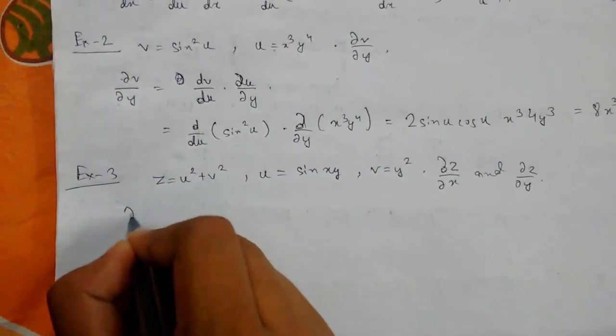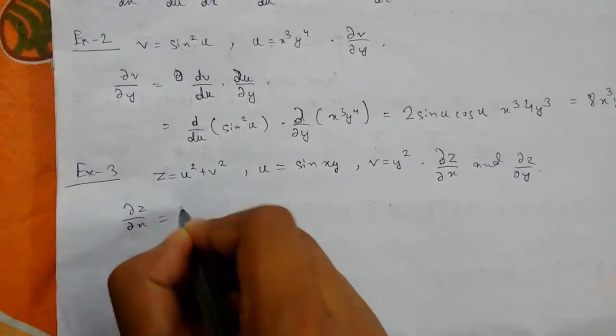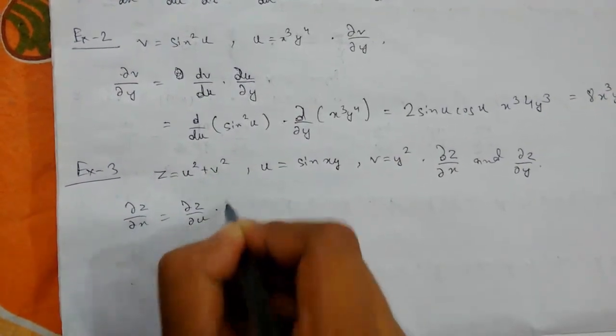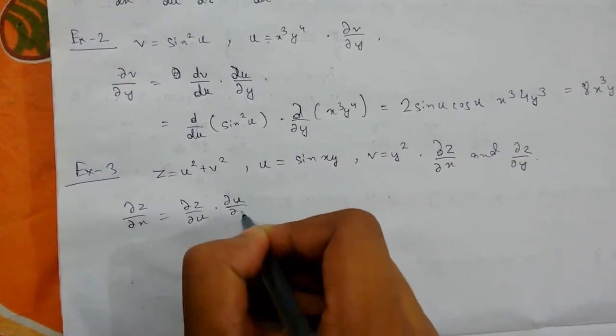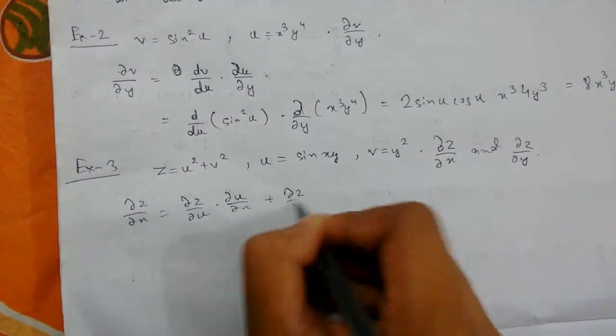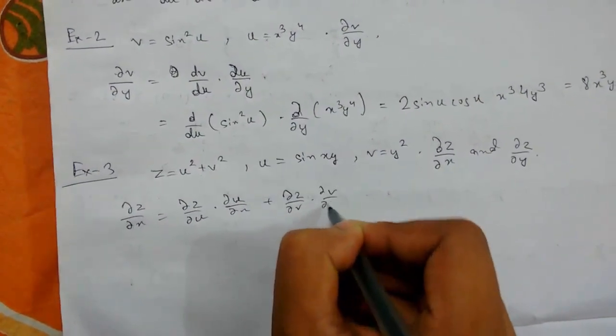So we apply this rule: dz/dx = ∂z/∂u·∂u/∂x + ∂z/∂v·∂v/∂x.